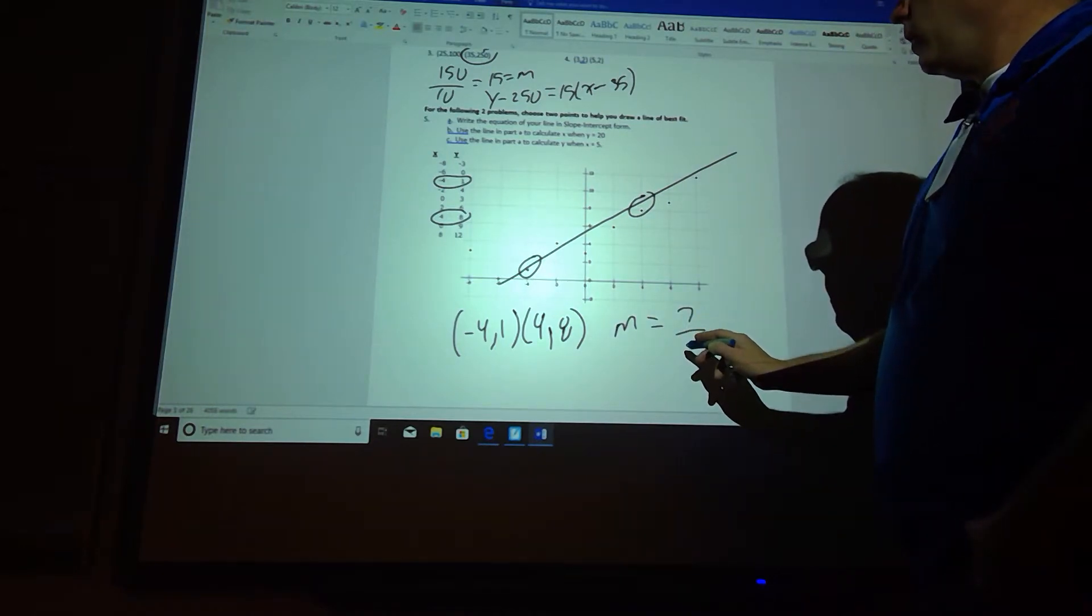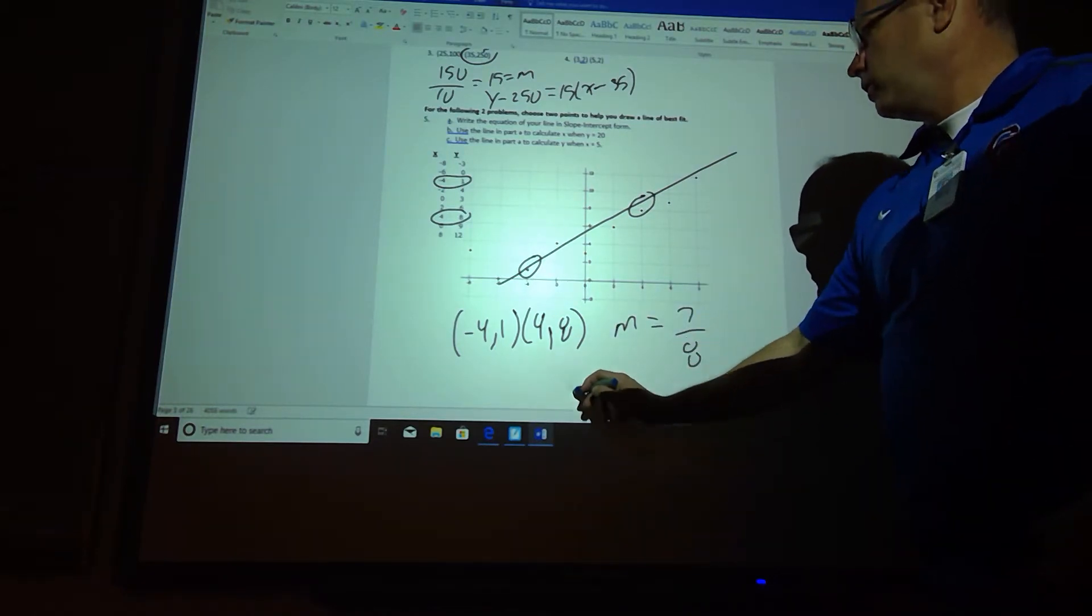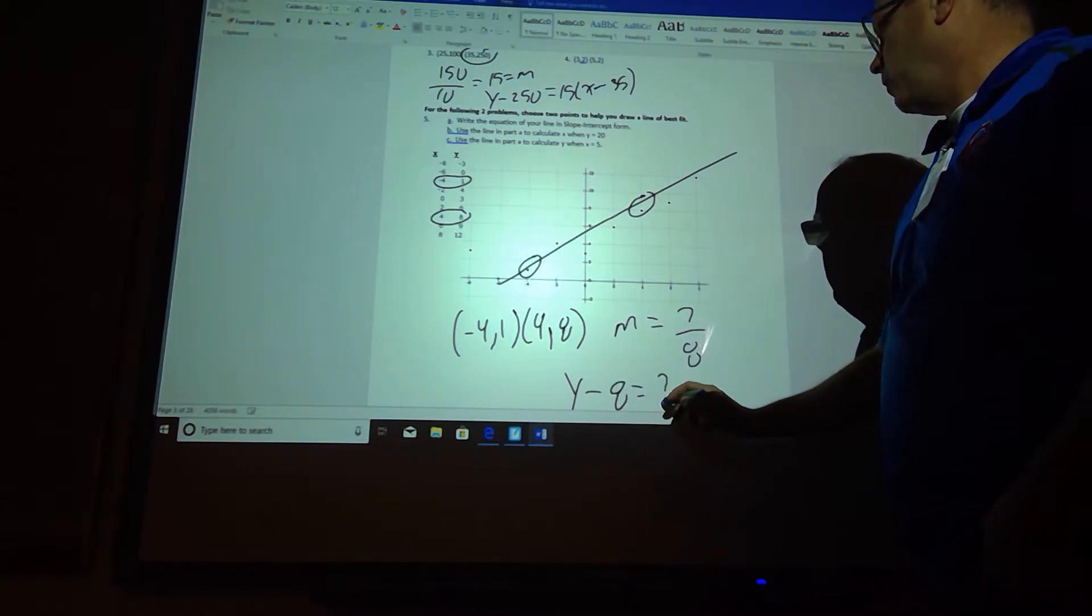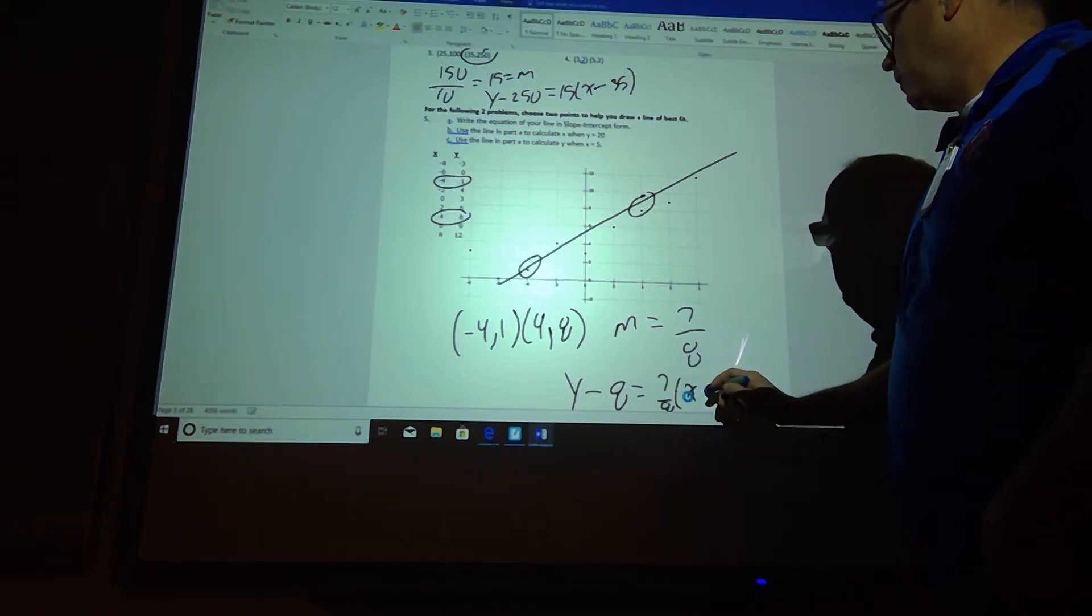Slope is 7 over 8. And point-slope form: y minus 8 equals 7 over 8 times x minus 4.